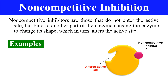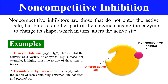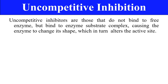Examples of non-competitive inhibition: first, heavy metals such as Hg²⁺ and Pb²⁺ inhibit the activity of a variety of enzymes — for example, urease is highly sensitive to these ions. Similarly, cyanide and hydrogen sulfide strongly inhibit enzymes that contain iron, such as catalase and peroxidase. These are examples of non-competitive inhibition.